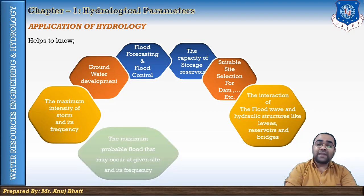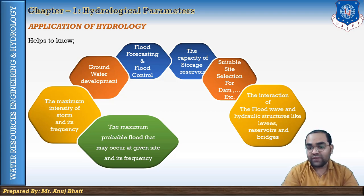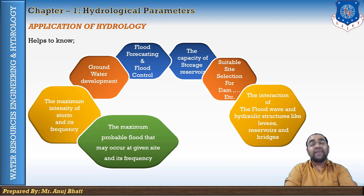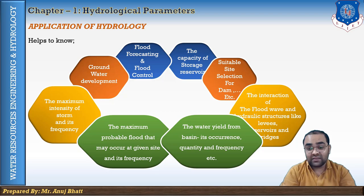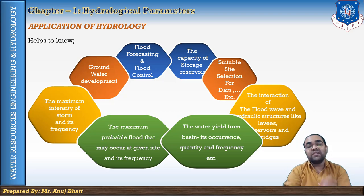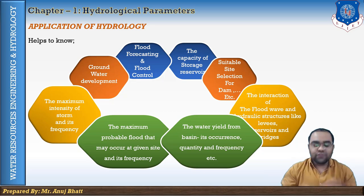Hydrology also helps determine the maximum probable flood that may occur at a given site and its frequency, which is required for the safe design of drains, culverts, dams, reservoirs, and canals. Another application is knowing the water yield from a basin — its occurrence, quality, and frequency — necessary for the design of dams, municipal water supplies, water power, and river navigation.